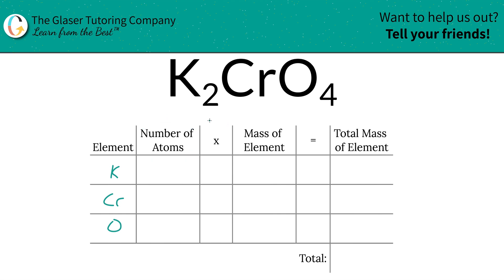Next is to identify the number of atoms. That's where the subscripts come into play. So at the bottom of potassium there's a two, so that means we got two atoms. Chromium, there's only one, so we got a one. And oxygen there's going to be four.